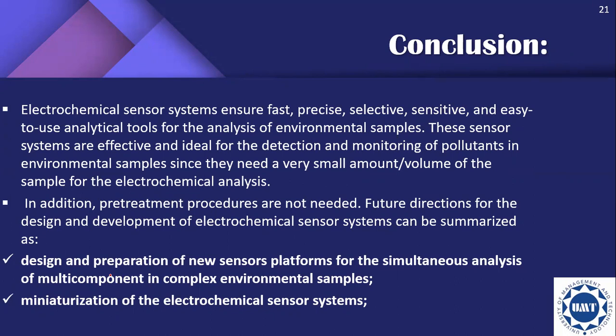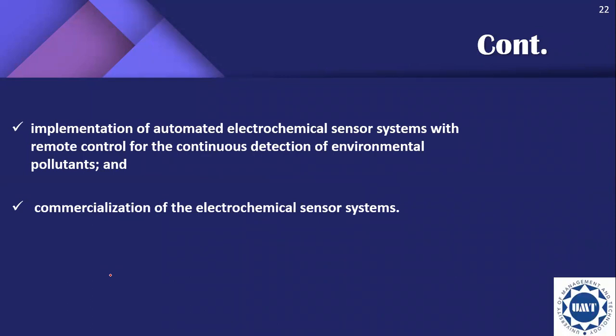Electrochemical sensors ensure fast, precise, selective, sensitive, and easy-to-use analytical tools for environmental sample analysis. These sensor systems need only a very small volume of sample and pre-treatment procedures are not needed. Future directions include design of new sensor platforms for simultaneous multi-compound analysis in complex environmental samples, miniaturization of sensor systems, and implementation of automated electrochemical systems with remote control for continuous detection of environmental pollutants and commercialization.